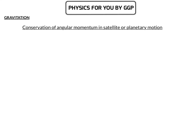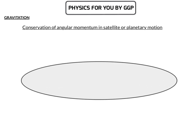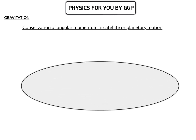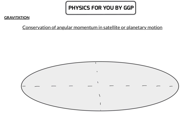I'll discuss the conservation of angular momentum in satellite or planetary motion. From Kepler's law, planets revolve around the sun in an elliptical orbit with the sun located at one of the foci. The sun is at one focus and planets revolve around it in an elliptical orbit, and similarly a satellite revolves around a planet in an elliptical orbit.